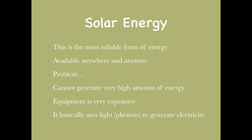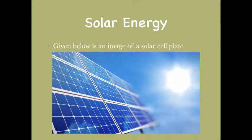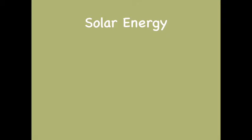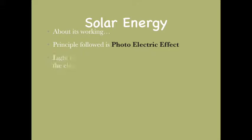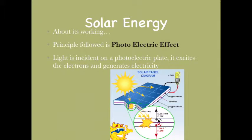The basic principle solar energy uses is that it captures light energy to generate electricity. A classical example will be shown soon. Given below is an example of a solar cell plate — these blue ones are the solar plates which will be capturing the light energy from the sun. The principal used here is the photoelectric effect. Light is incident on a photoelectric plate, it excites the electrons and generates electricity, as shown in the diagram.